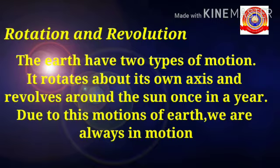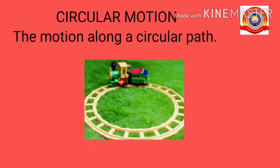Due to these motions of the earth, we are always in motion. Then we discussed about circular motion — the motion along a circular path is called circular motion. A train running along a circular path is given as an example for that.